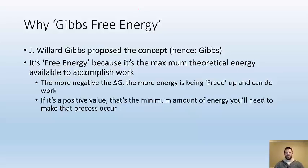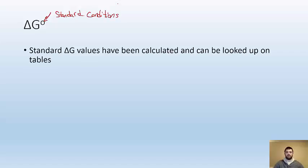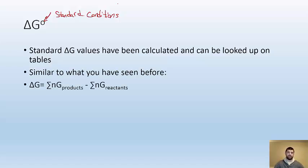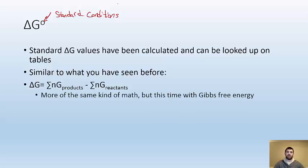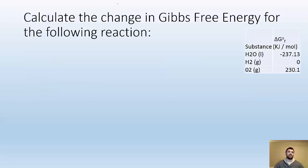So ΔG° - you guys should hopefully see a pattern by now - that just means that it's at standard conditions. Like a lot of our delta whatever naughts, you can look these up. I gave you guys tables, you can look them up. You don't have the tables, you can Google them. What is the ΔG value for your reaction, or just Google Gibbs free energy chart, standard chart. It's similar to what you've seen before. This ΔG equals the sum of the products Gibbs free energy minus the sum of the reactants free energy. It's more the same kind of math, but this time we're using ΔG instead of ΔH or ΔS.